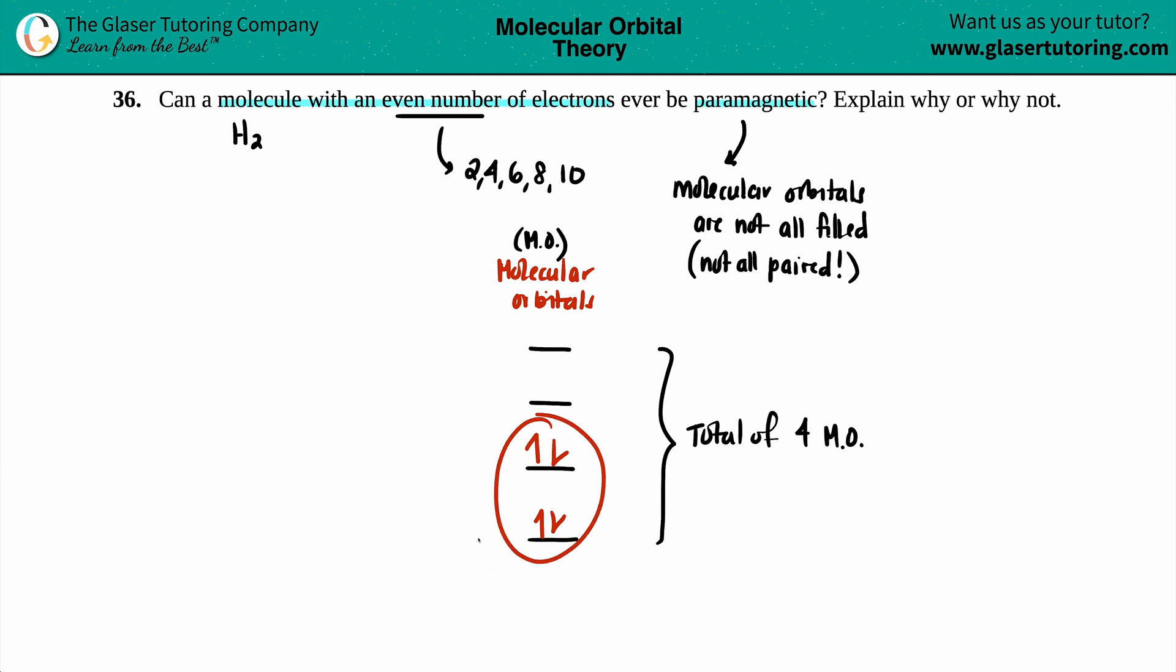And this would be classified as paramagnetic. If I took two off, that's four. That's an even number, right? That's paramagnetic. If I took two off, that's two. That's an even number of electrons. That's paramagnetic.